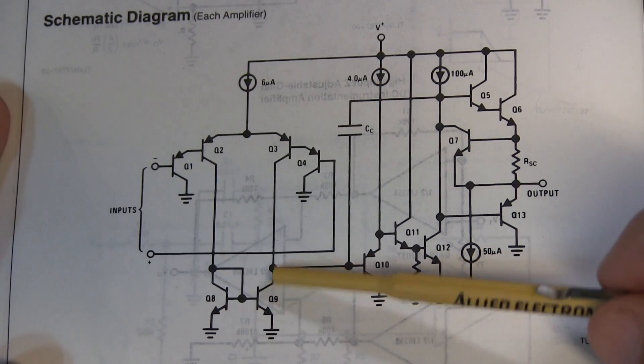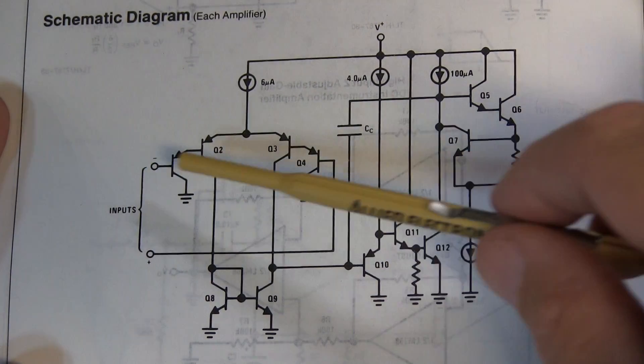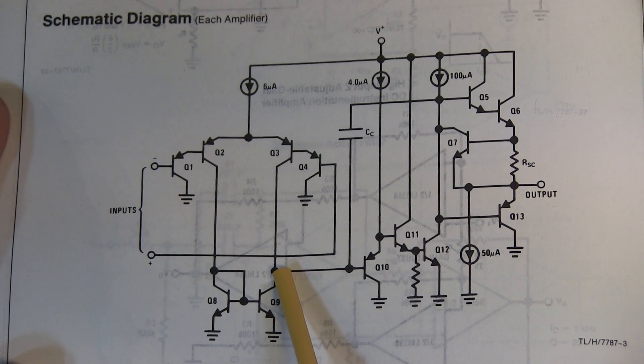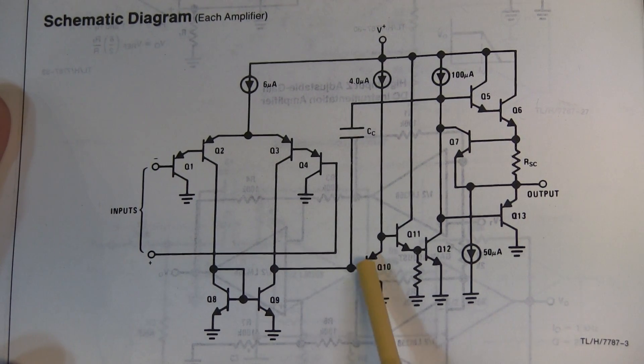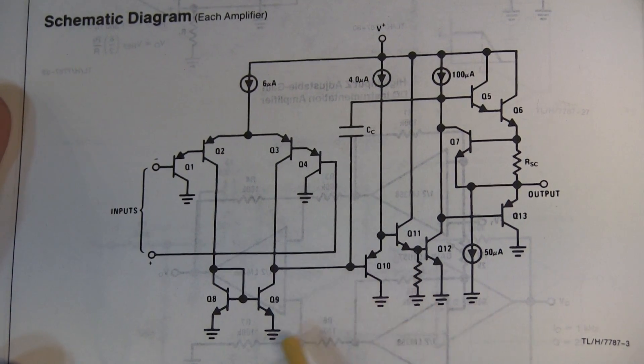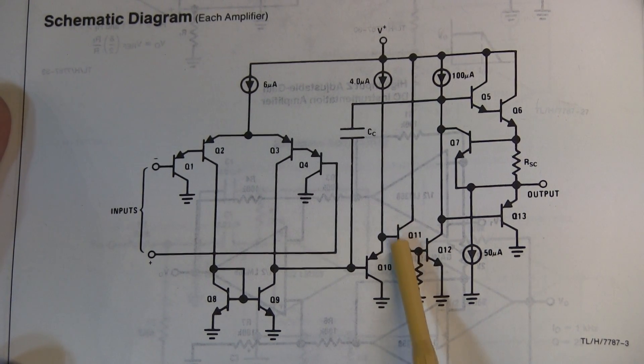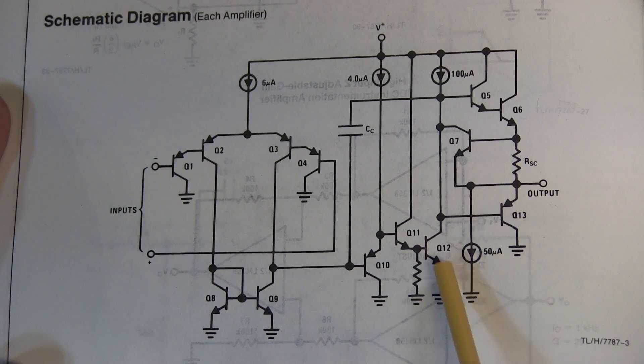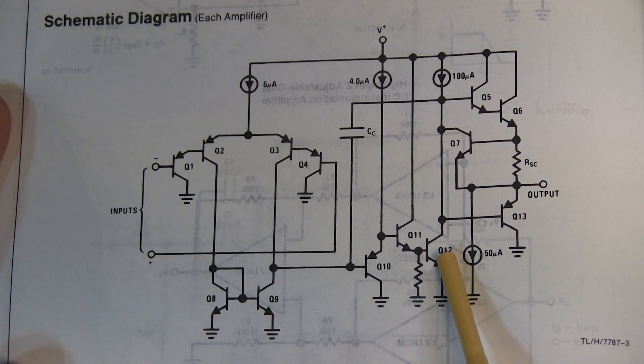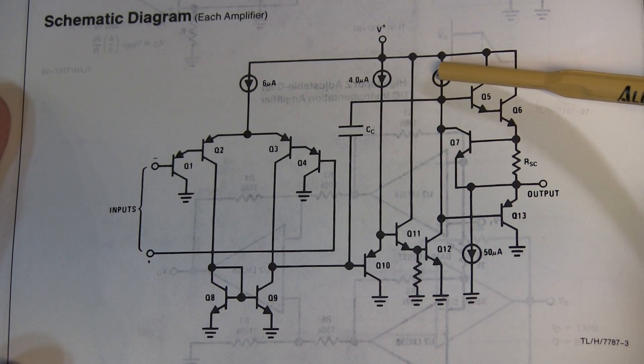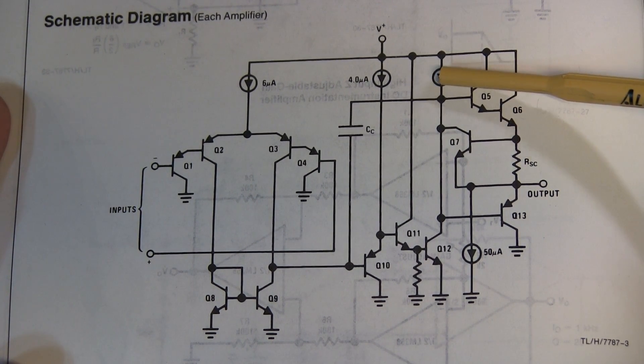This is essentially the first amplifier. That's an actively loaded stage with a current source here, so we get a lot of gain from these inputs to this output node right here. That's going into a PNP emitter follower or common collector amplifier. And then that is followed back down by an NPN emitter follower into a common emitter amplifier stage here that is actively loaded with this current source.